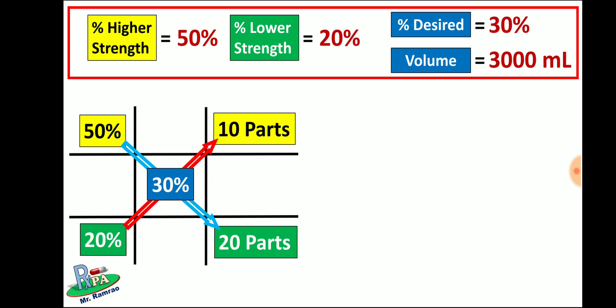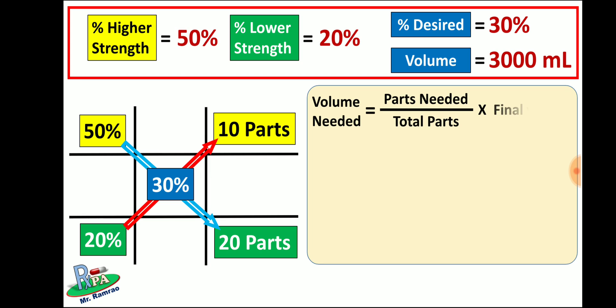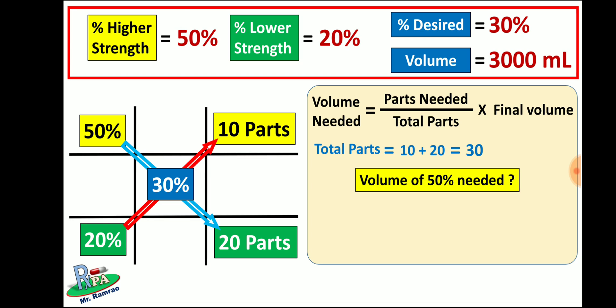But here the question asks for volumes, so we use the formula: volume needed = (parts needed / total parts) × final volume. Total parts = 10 + 20 = 30 parts. For the volume of 50% needed: volume needed = (10 / 30) × 3000 ml. After calculation this gives 1000 ml.